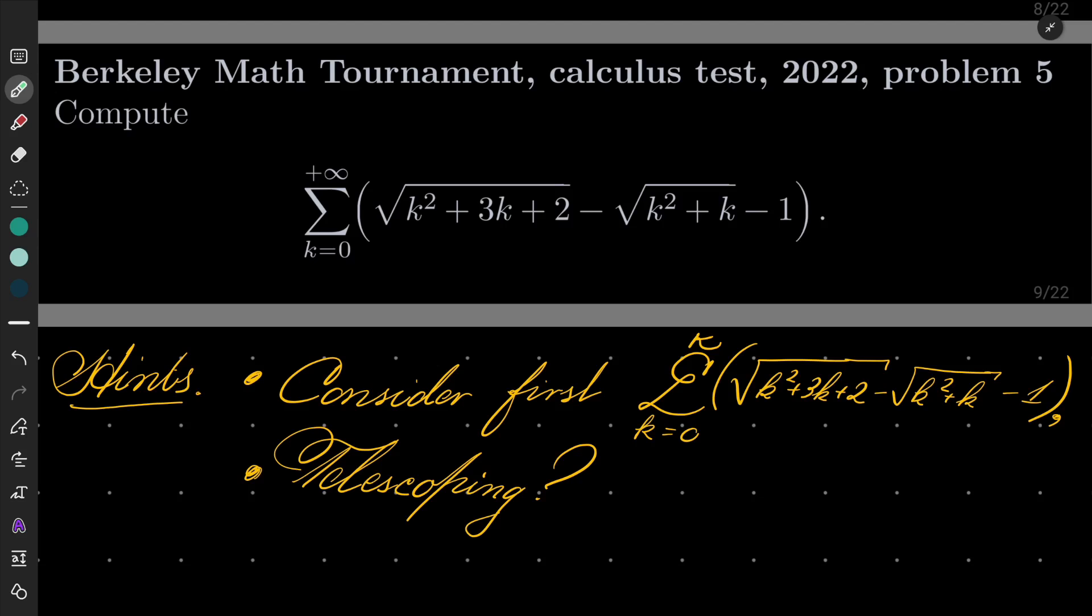My hints for this problem. First consider the finite sum from k equals 0 to capital K of our expression and probably some type of telescoping will be going on. Give this problem a try and I will see you in just a minute.